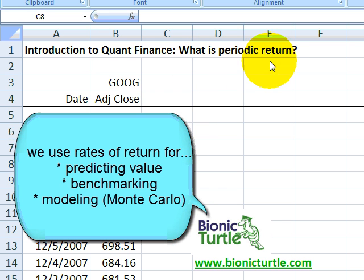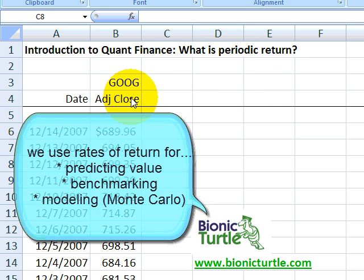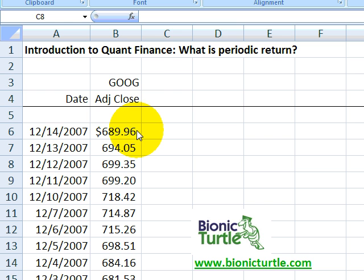So let's consider, what is the periodic rate of return? Here, I've pulled up from Yahoo Finance daily stock price closes for Google's stock. So we have December 14th, on an adjusted basis, Google closed at $689.96. On December 13th, the day before that, Google closed here,